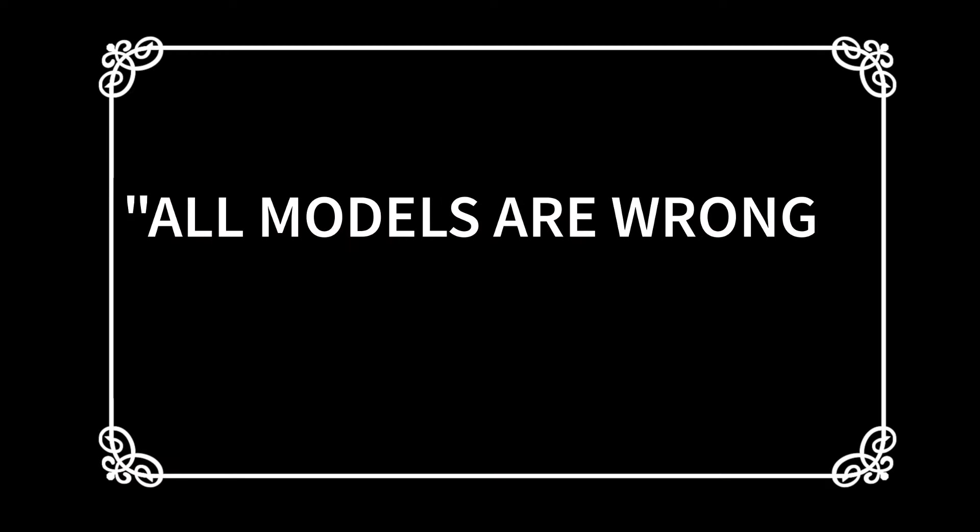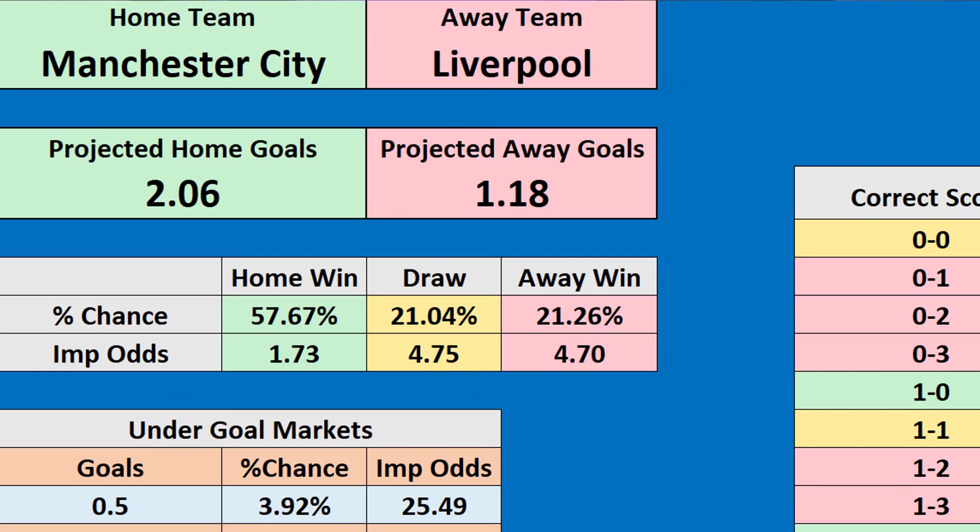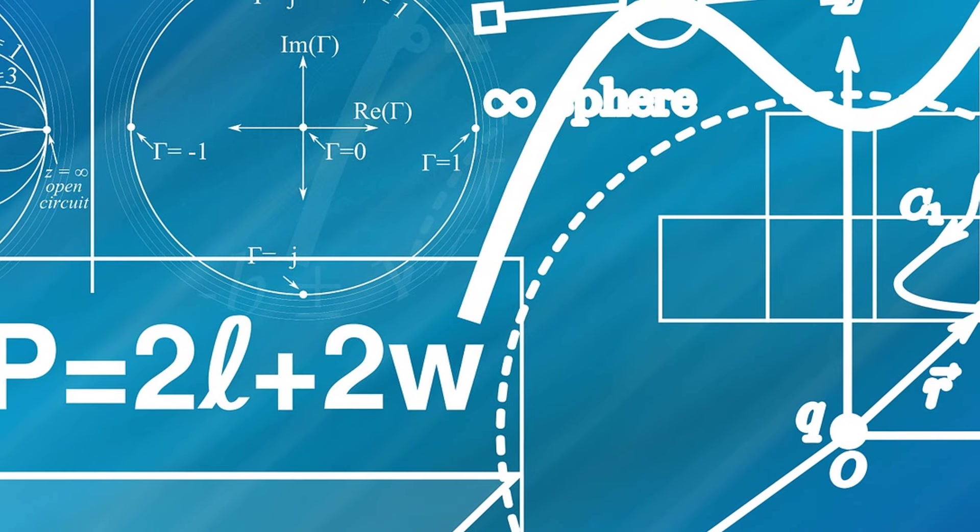Before we go through the step by step guide, there are a couple of things we need to go over. Firstly, 'all models are wrong but some are useful' is a quote normally attributed to George Box, and it applies to all models including this one. Essentially all models fall short of explaining all the complexities of anything you're trying to model, so there are no models which can accurately predict a future reality. However, that doesn't mean models and predictions are never useful, because the model is giving you a prediction based off real life data.